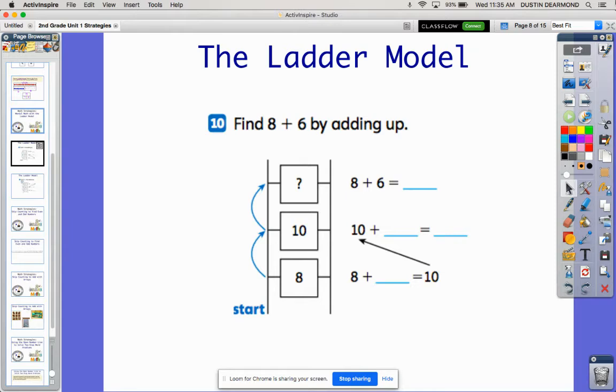Think about it the same way we did with the open number line. In this problem we're looking at eight plus six. We're starting at eight. Instead of counting on all six, because we're trying to do this in our head, I'm going to jump from eight to ten because that's a friendly number.